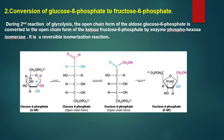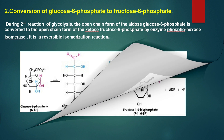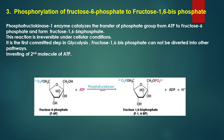Is process ko enzyme phosphohexose isomerase catalyze karta hai. Yah reversible isomerization process hai. Third reaction is phosphorylation of fructose-6-phosphate to fructose-1,6-bisphosphate. Is reaction mein enzyme phosphofructokinase-1, ATP se phosphate group ko fructose-6-phosphate mein transfer karta hai, jisse fructose-1,6-bisphosphate banta hai. Is reaction mein ATP ka second molecule invest hota hai. Yah glycolysis ka first committed step hai. Phosphofructokinase-1 enzyme ek regulatory enzyme ki tarah kaam karta hai jo glycolysis process ko regulate kar sakta hai. Yah irreversible reaction hai.